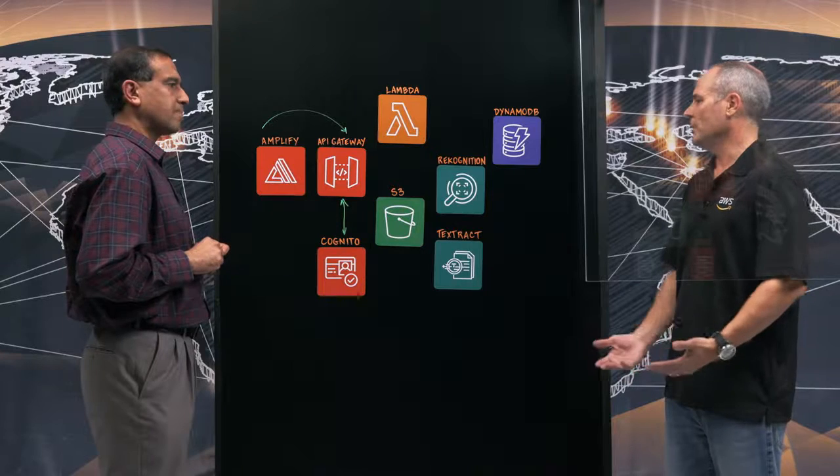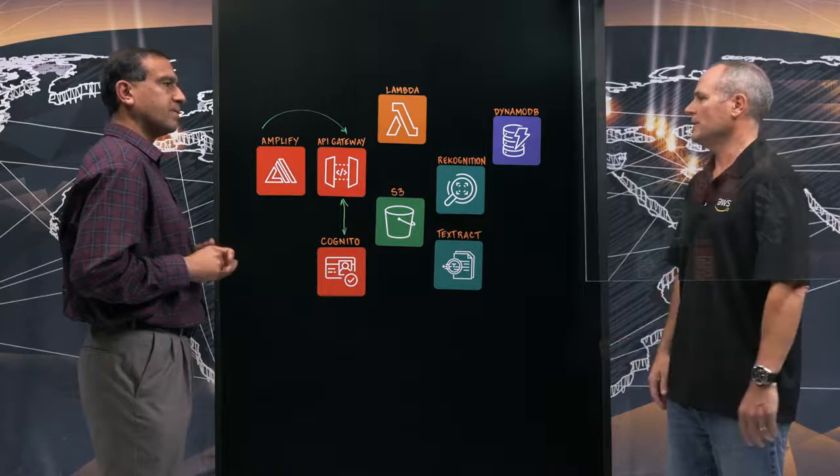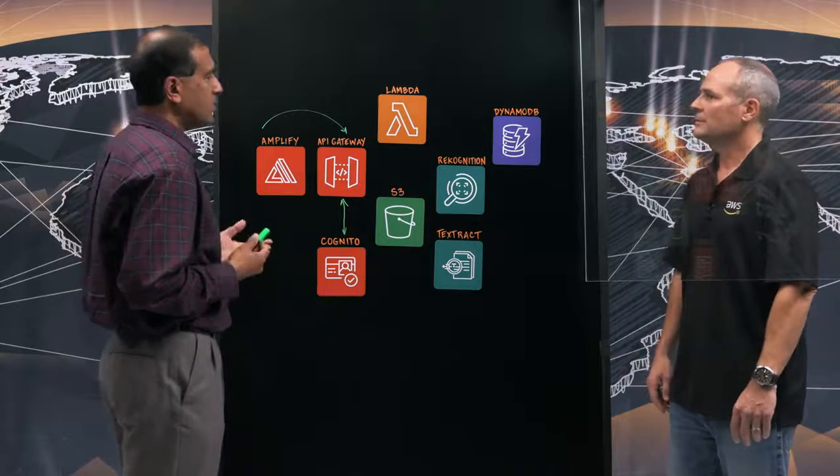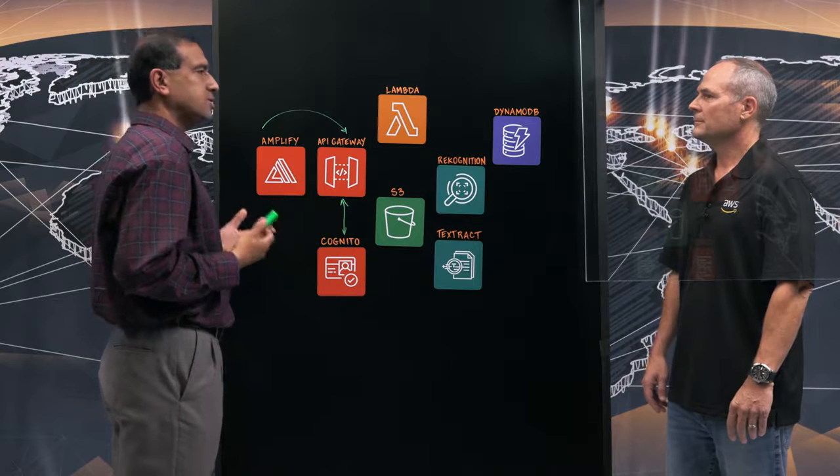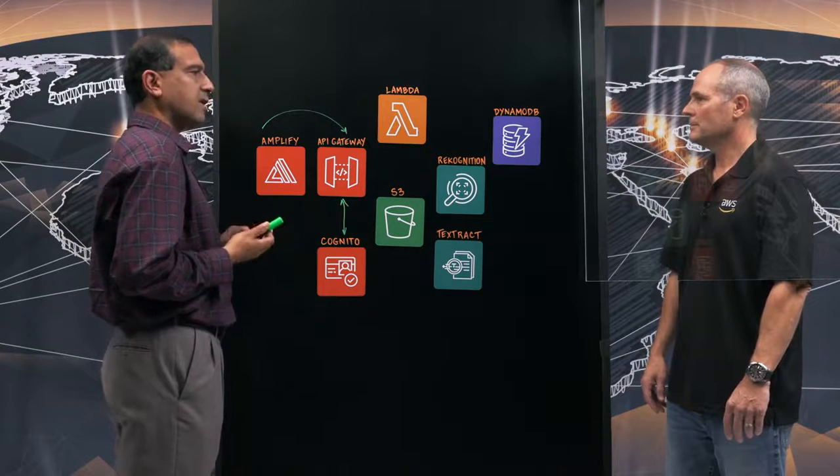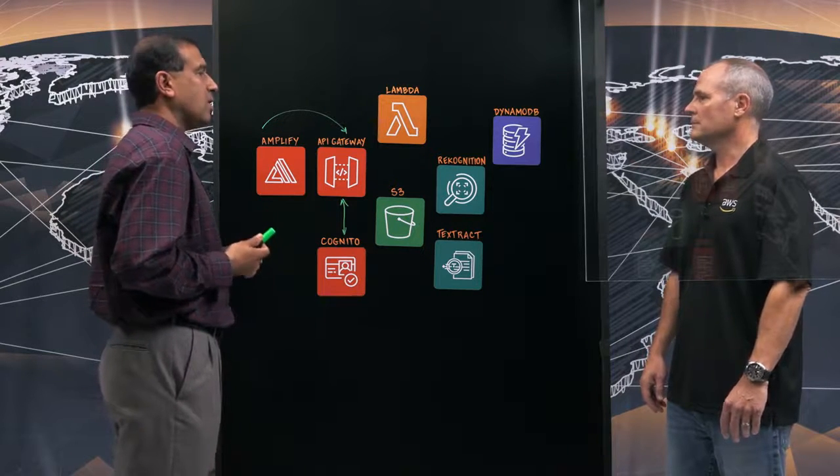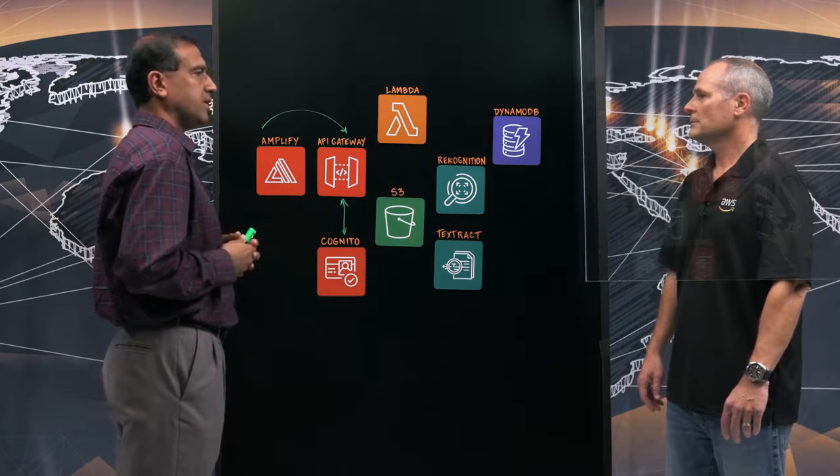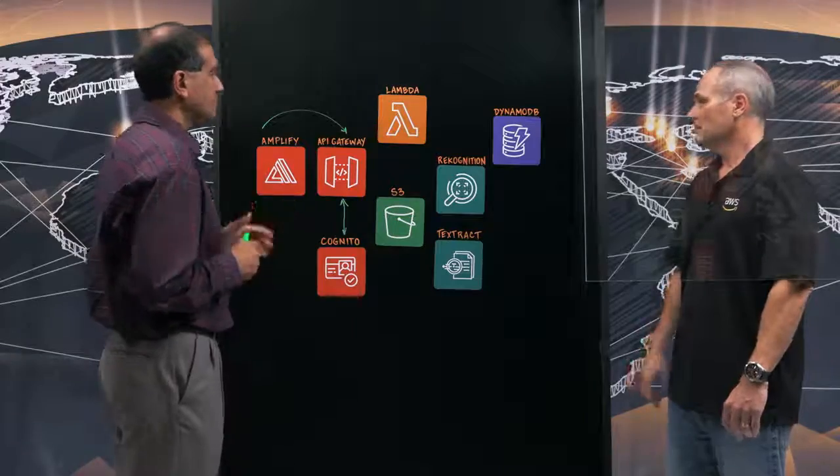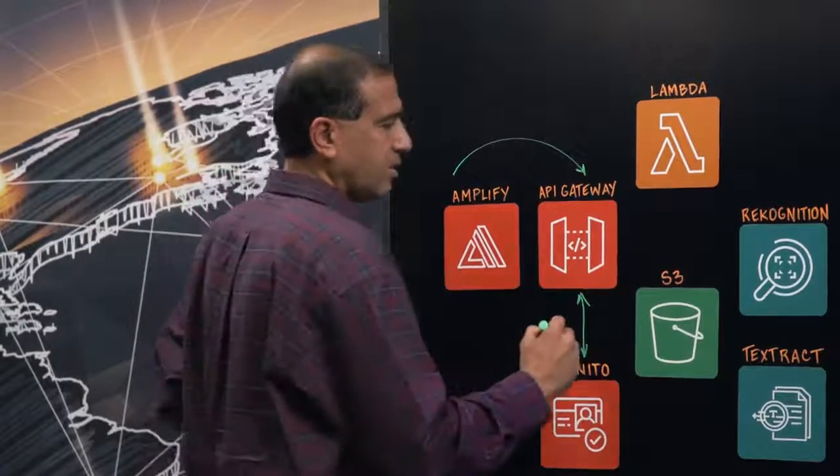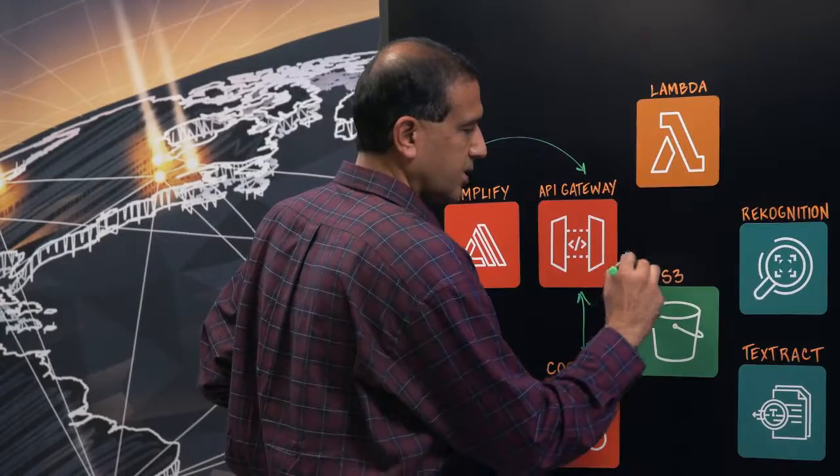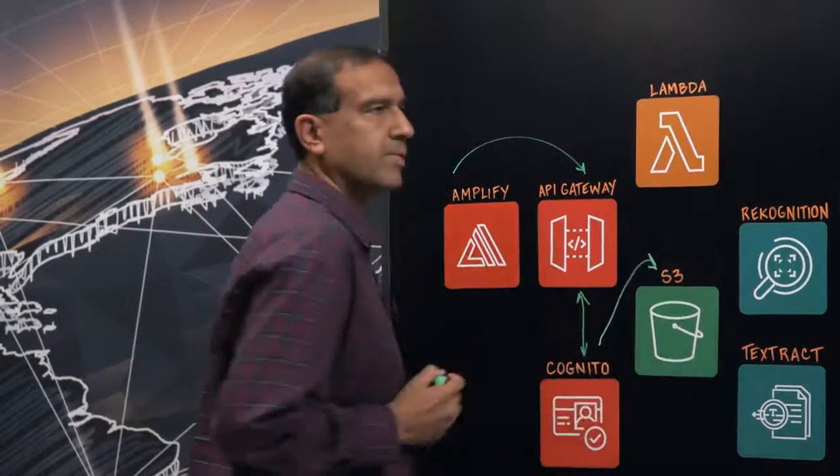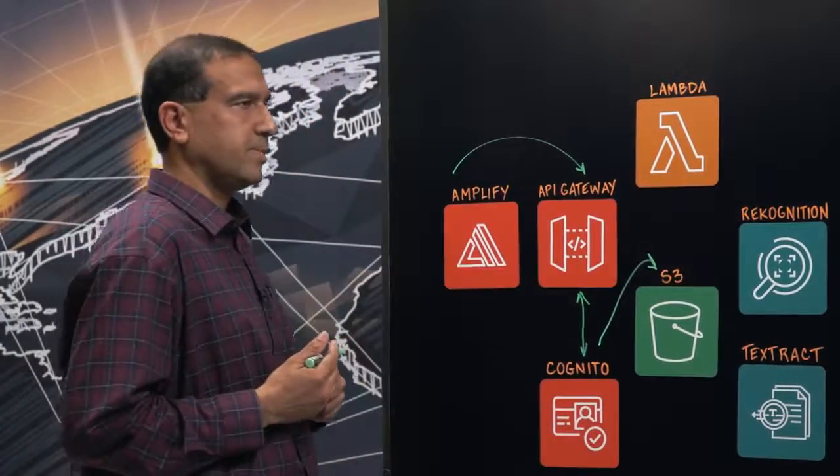And then as far as the flow, what am I doing in this particular use case? Once authenticated, the users can do two things. They can either upload their inventory details or they can post their inventory to third-party retail sites. Okay. So once they upload, the API Gateway again kicks in and the images are stored in S3. Okay. So these are in the raw bucket.